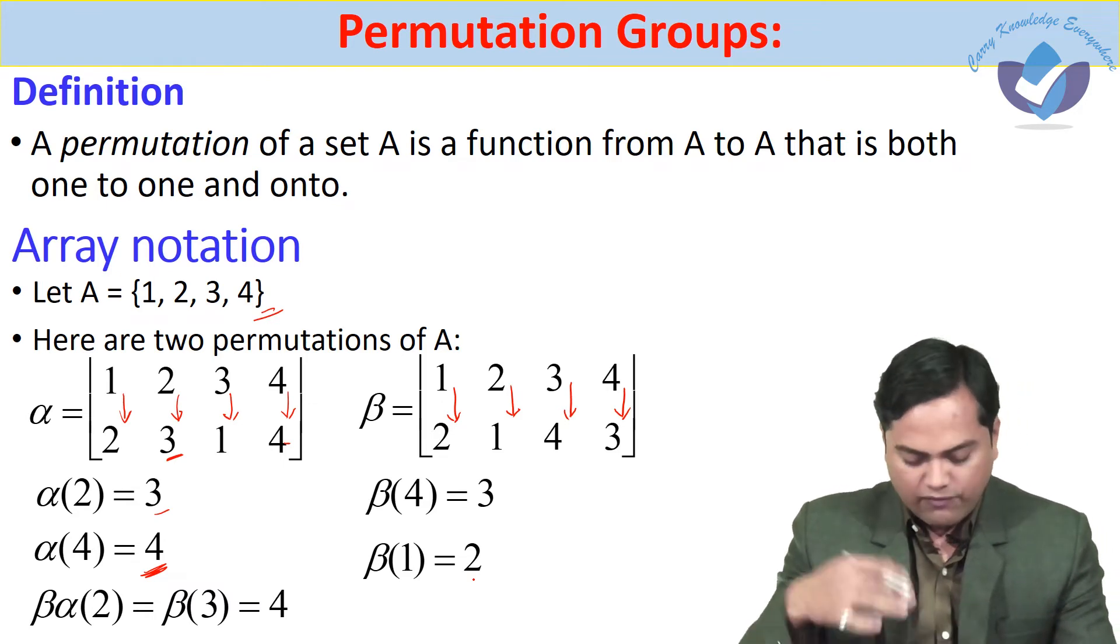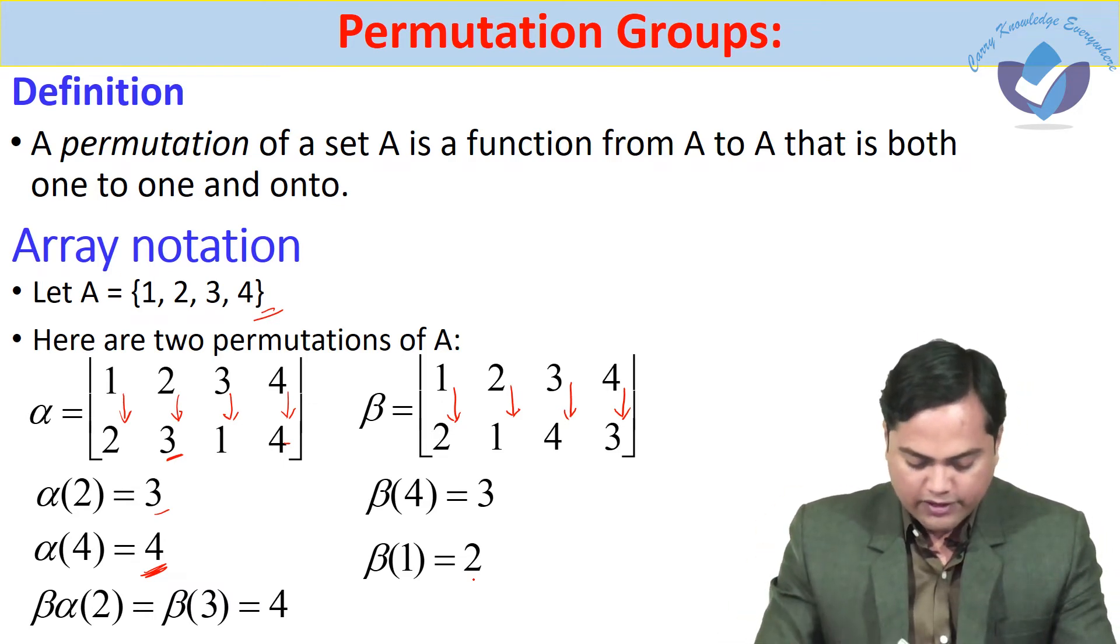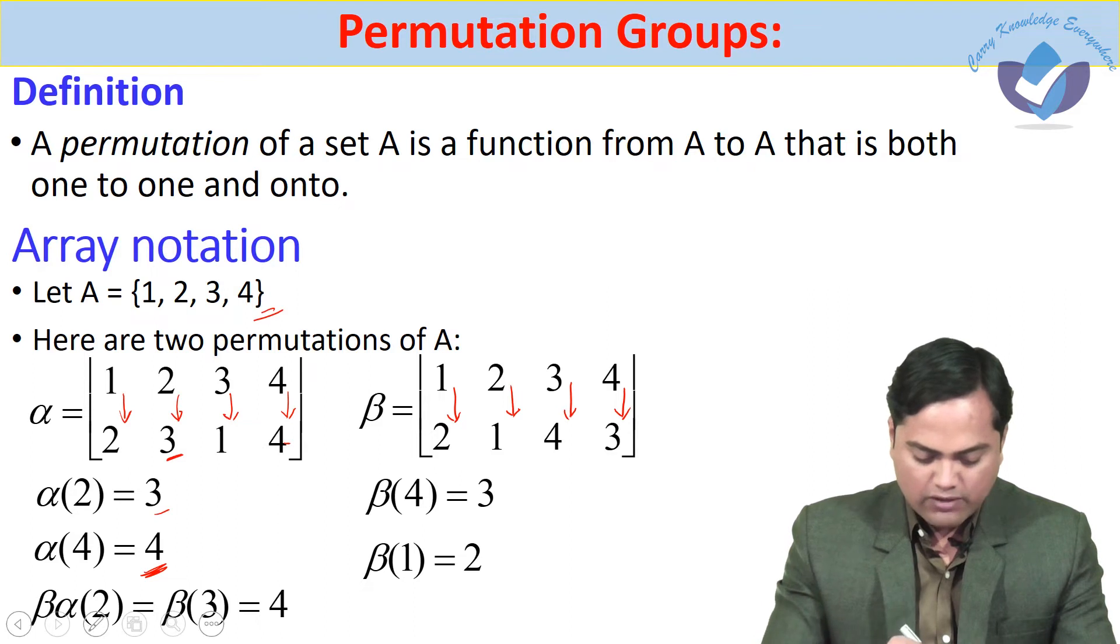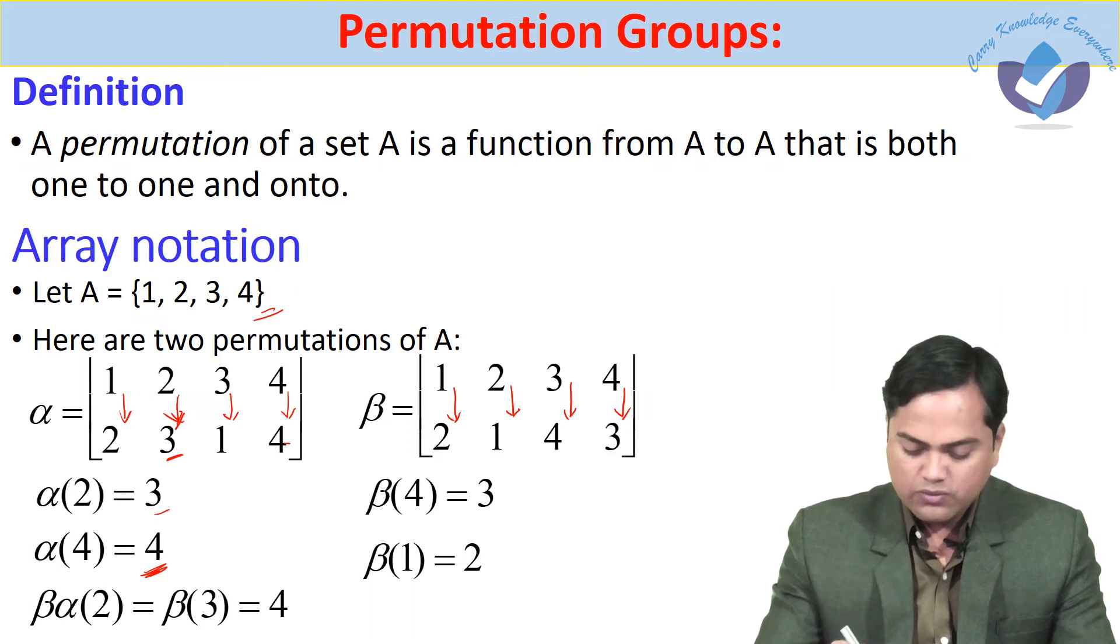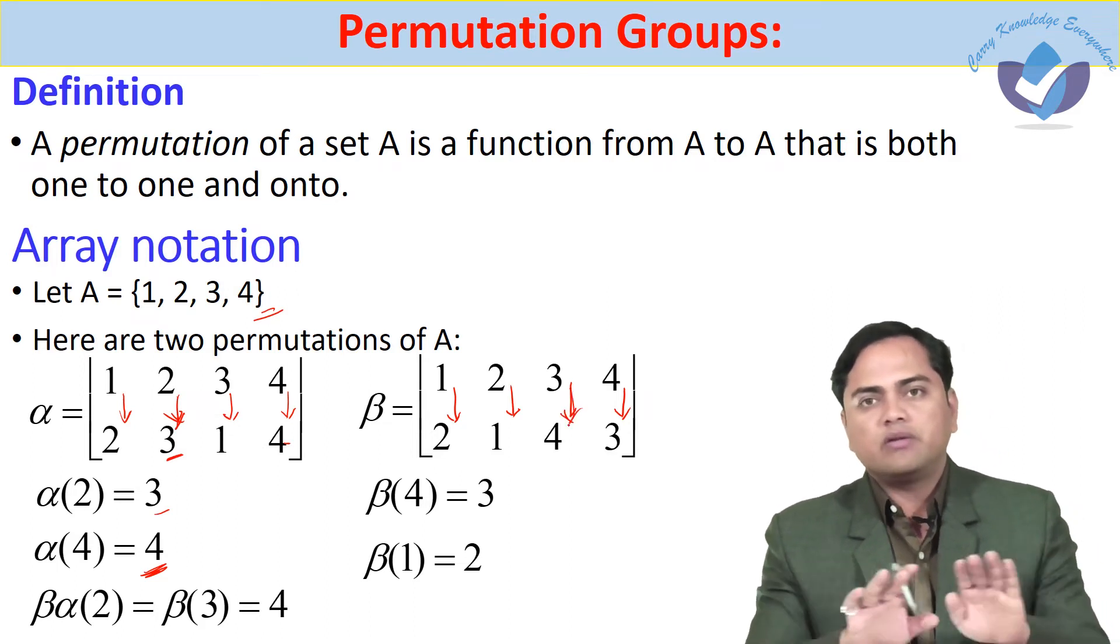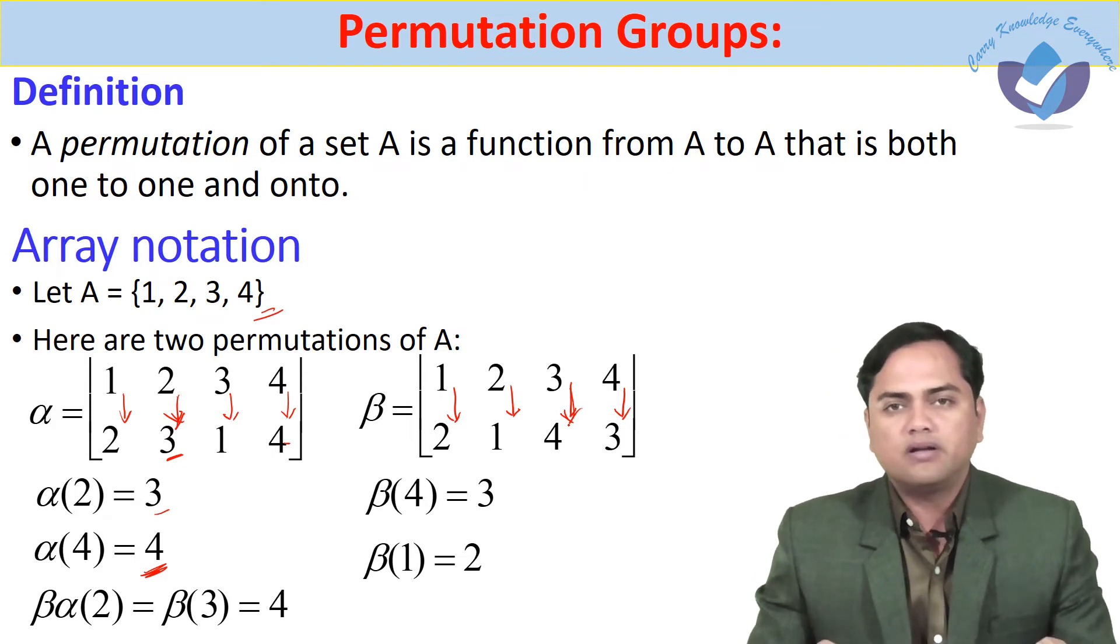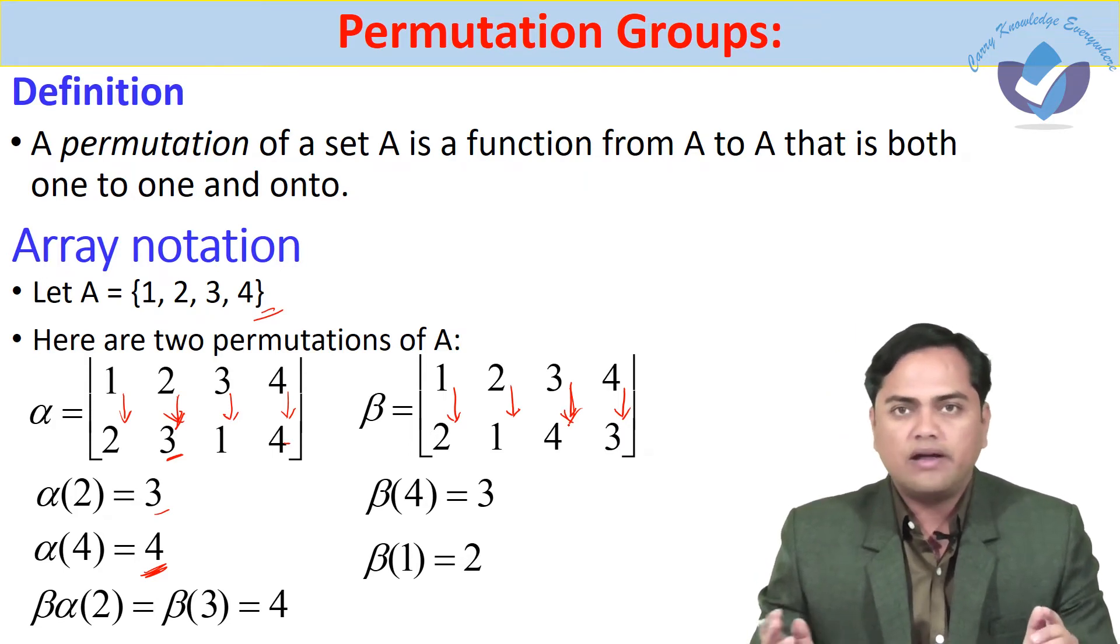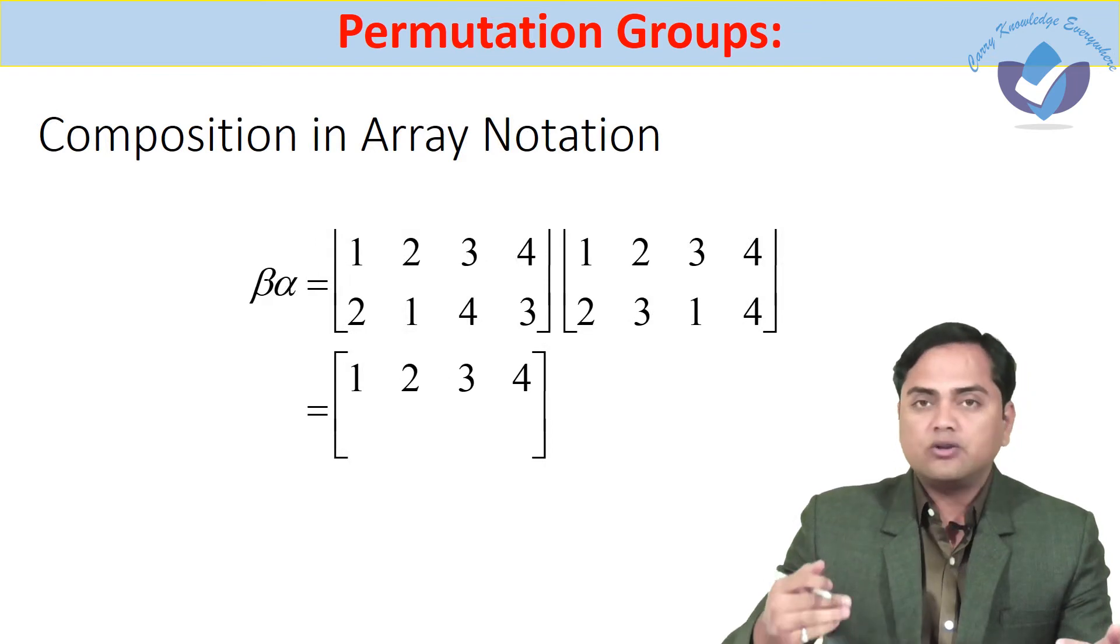Beta of alpha of 2: first alpha is working on this, so alpha(2) comes out to be 3, and so beta(3) gives you 4. In this way we can make a composition of the two functions alpha and beta. Now let us look at the composition formally.